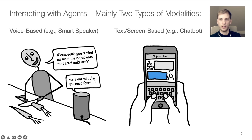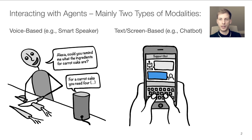Most of these conversational agents are still rather passive, waiting for the user to make a request. However, with technological advances, they will become more and more capable to also proactively intervene by themselves, which leads us to the question of how best to design such proactive assistants, including which modality they should use.